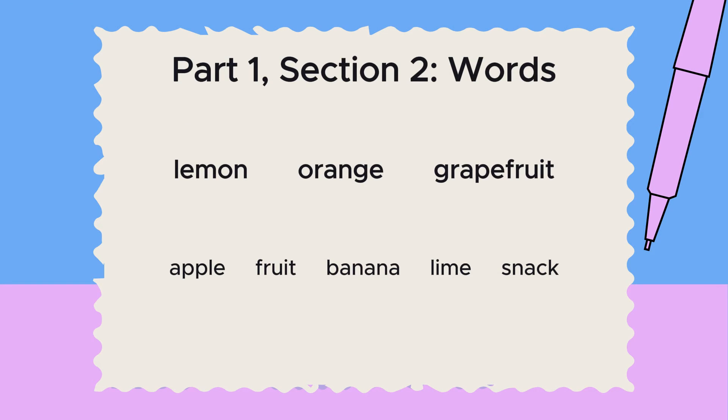All right, moving on to the next section of the test, which is called words. In each of these questions, there are three words in bold. These three words are similar in some way. Decide how they are the same, then choose the word from the answer choices that goes with the first three words. The first three words are lemon, orange, and grapefruit. These are all types of citrus fruits. Therefore, we need to select the answer choice that is also a citrus fruit. So the correct answer is lime.